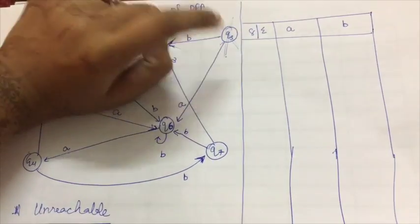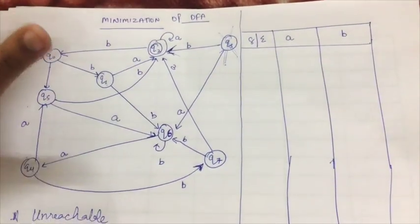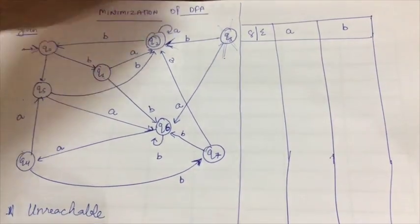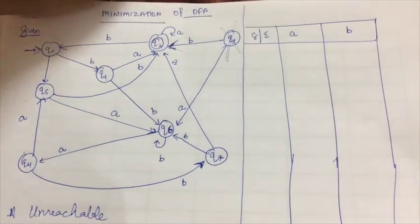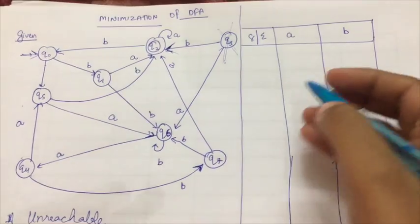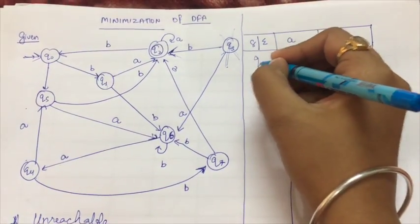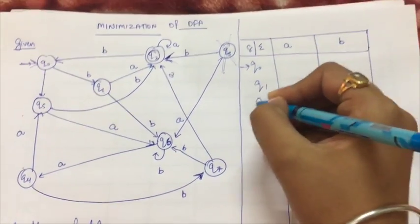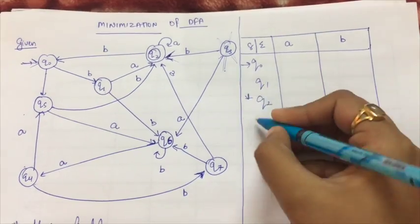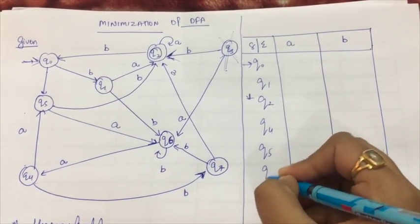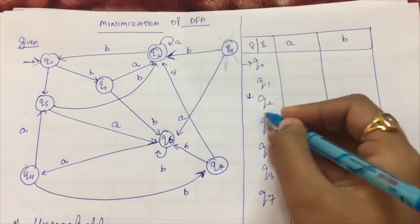So the only unreachable state is Q3 here. Now we have to remove this unreachable state and we have to make the transition table for it for the rest of the states. We'll make the transition table as follows: Q1, Q2 is the final state, then Q4, Q5, Q6, and Q7.